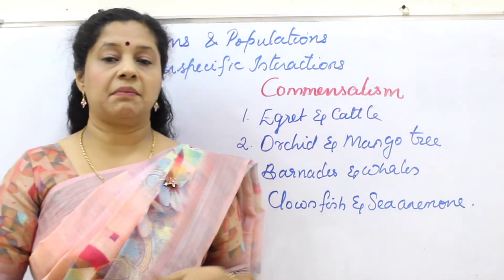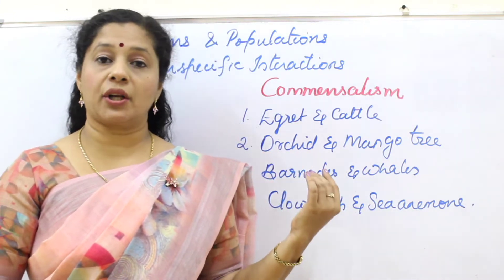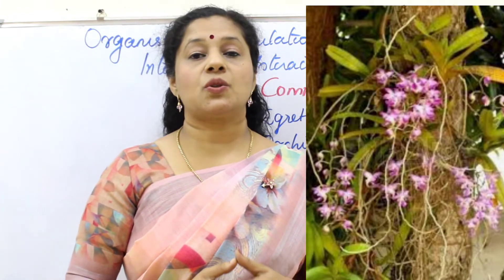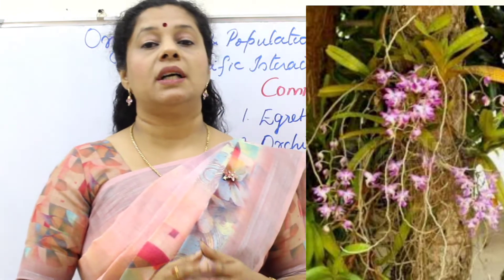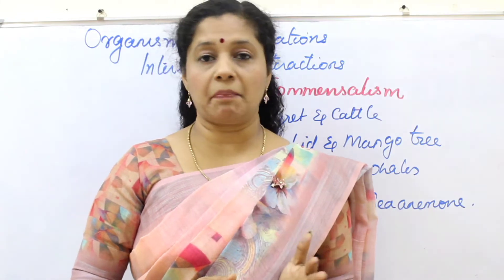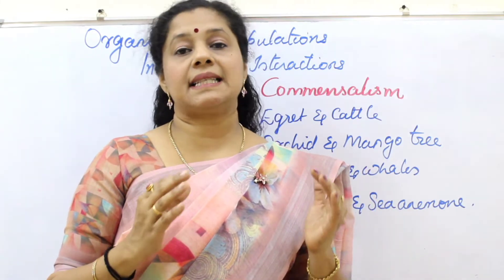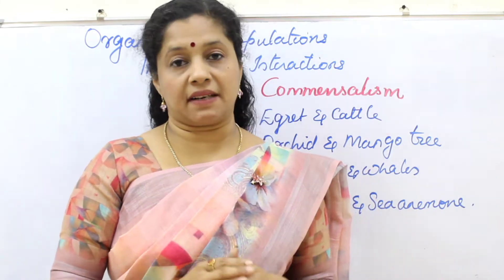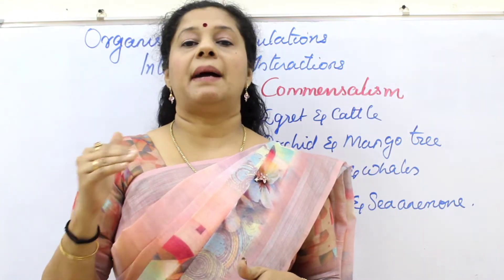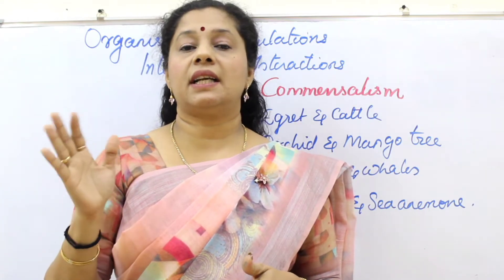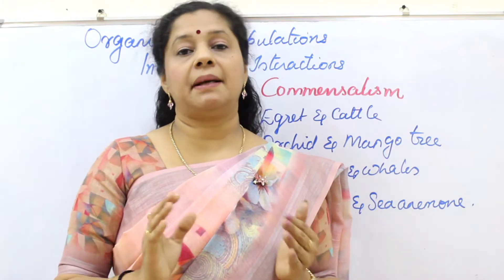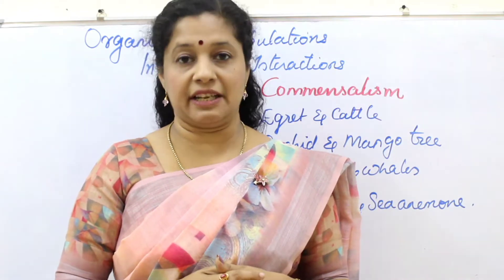The second example is an orchid growing on a mango tree, growing as an epiphyte. The orchid is not taking any nutrients or parasitizing the plant — it just takes some space for its survival and can otherwise take care of its own needs. So here the mango tree is neither harmed nor benefited, but at the same time the orchid gets a position to live.